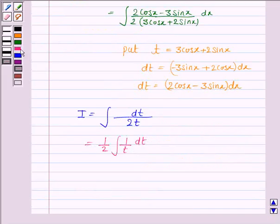Now the integral of 1 by t dt is log mod t plus c. So this is 1 by 2 log mod t plus c.